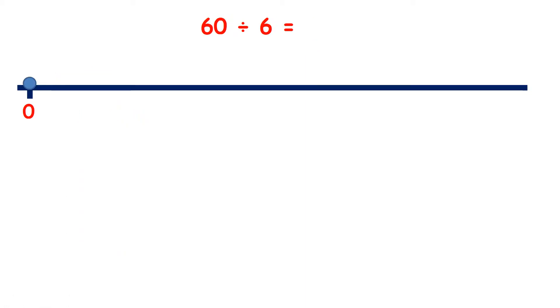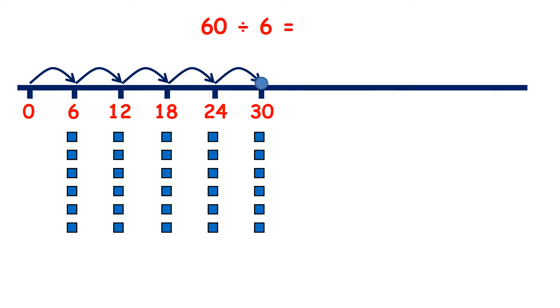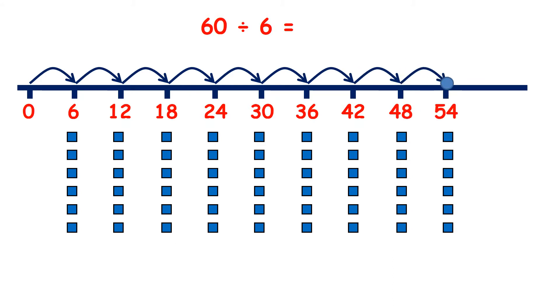Now we have 60 divided by 6. We don't really need a number line to answer this question because 60 is 6 tens. So if we divide 6 tens by 6, we're going to have 1 ten or we're going to have 10. But if we count in steps of 6: 6, 12, 18, 24, 30, 36, 42, 48, 54, and 60. So that's 10 groups of 6, so our answer is 10.